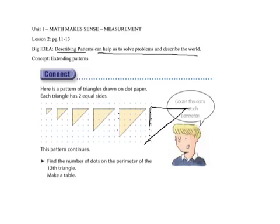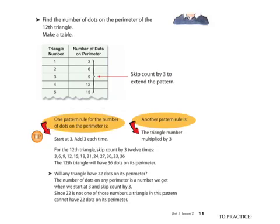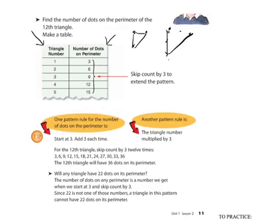We can find the number of dots on the perimeter of the triangles, and we're going to figure that out for the twelfth triangle using a table. Triangle one had three dots in the perimeter — a dot at each corner. When we extended it, the next one had three dots and three dots joined, so six dots in its perimeter, then nine dots, and so on.